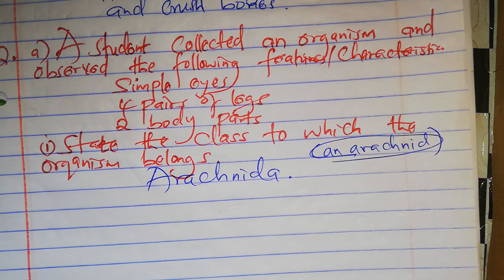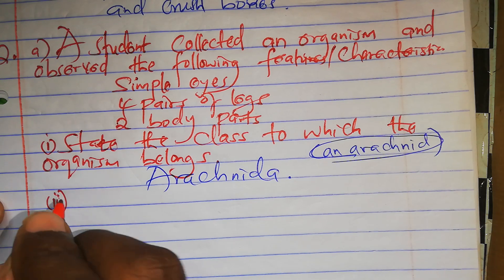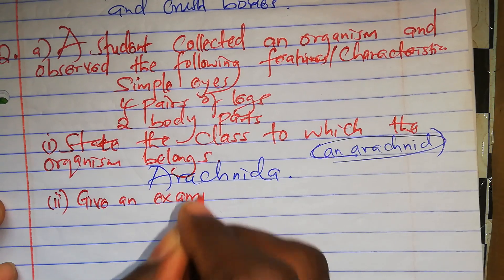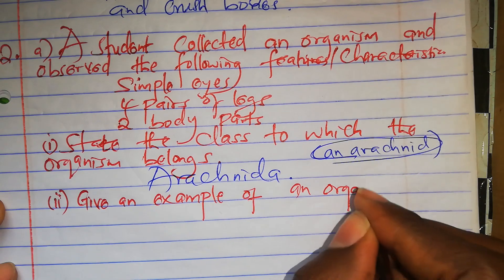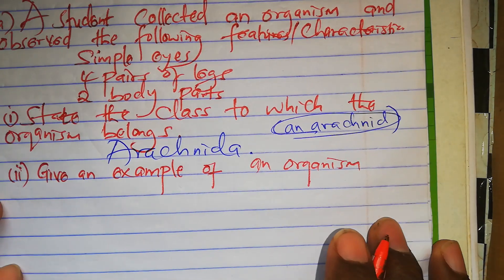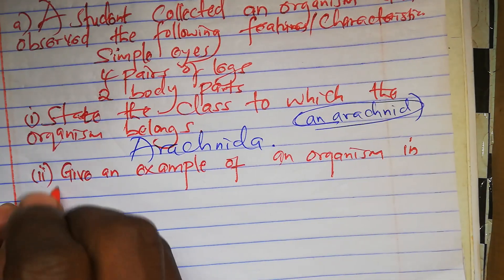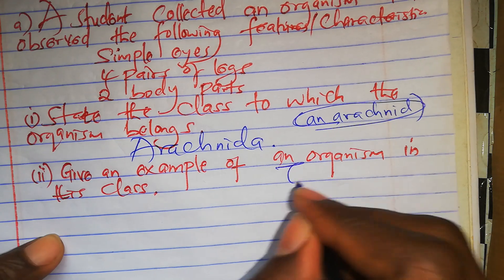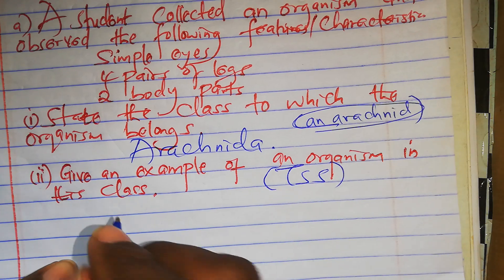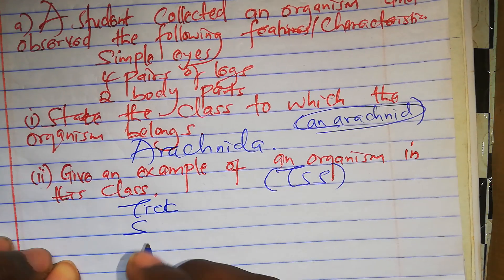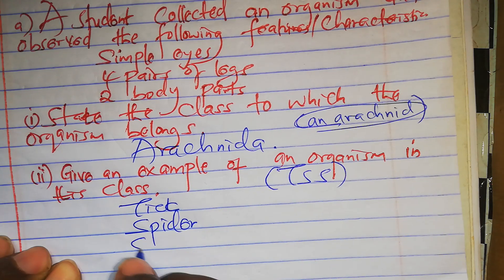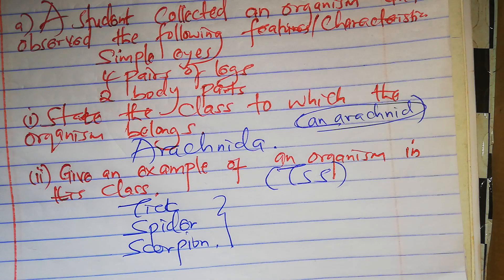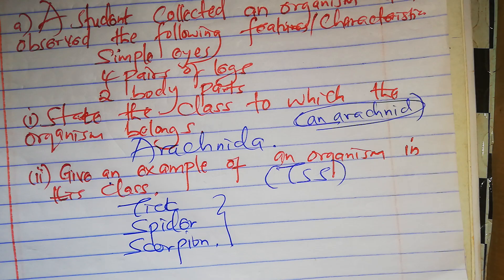Roman 2: give an example of an organism in this class. There is a formula I taught you — TSS for arachnids. T stands for tick, the first S is spider, and the second S is scorpion. Check on the spellings. These are the three members of Arachnida. They wanted just one example, but it's good we have listed a number of them.